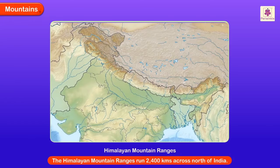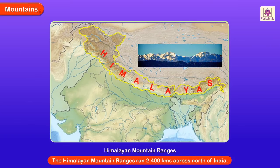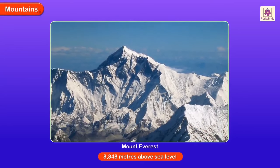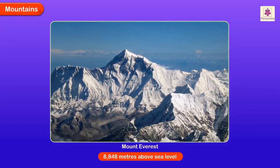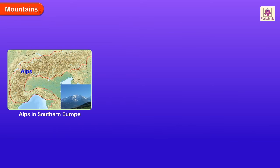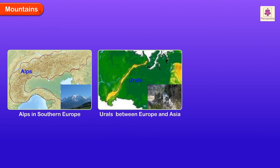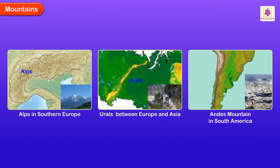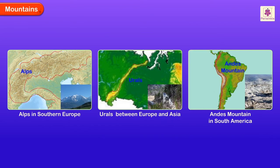A long chain of mountains is called a mountain range. The Himalayan mountain ranges run 2400 kilometers across north of India. Standing at 8848 meters above sea level, Mount Everest in the Himalayas is the highest peak in the world. Other mountain ranges include the Alps in southern Europe, the Urals, which act as a natural boundary between Europe and Asia, and the 7000 kilometers long Andes Mountain in South America, which is the longest mountain range in the world.